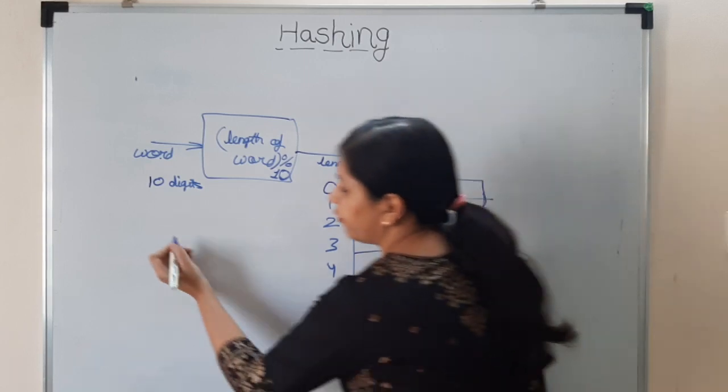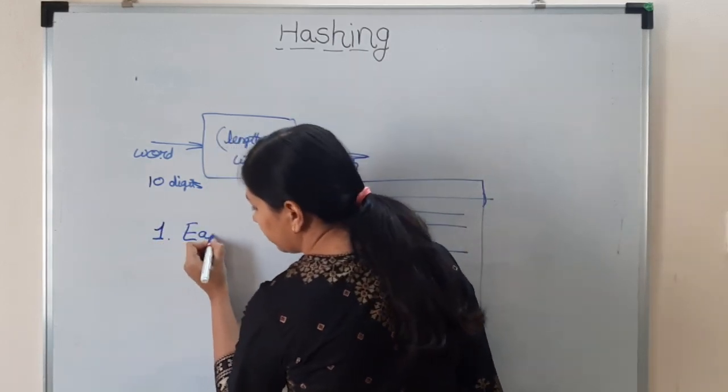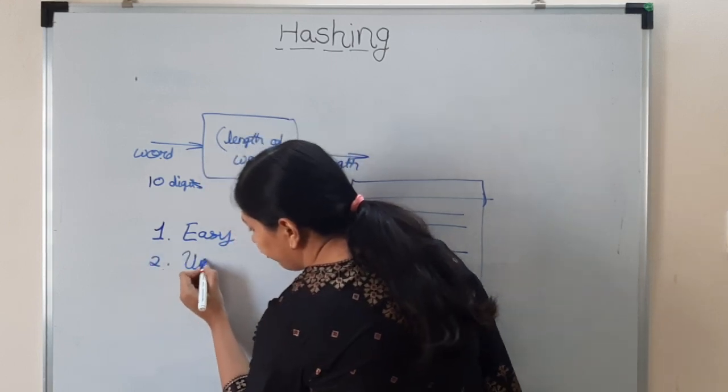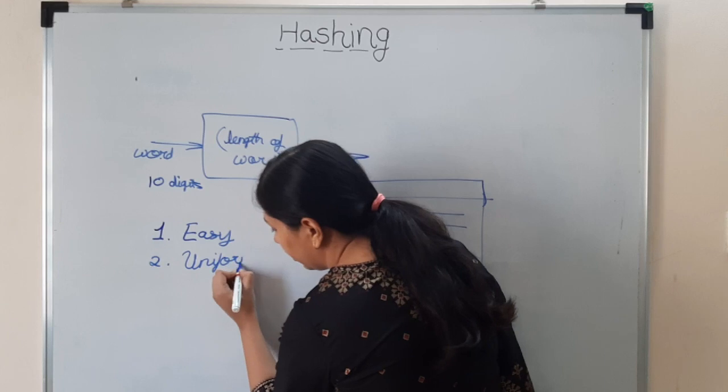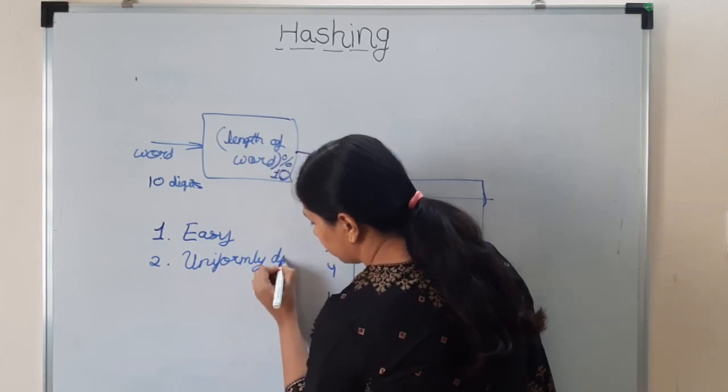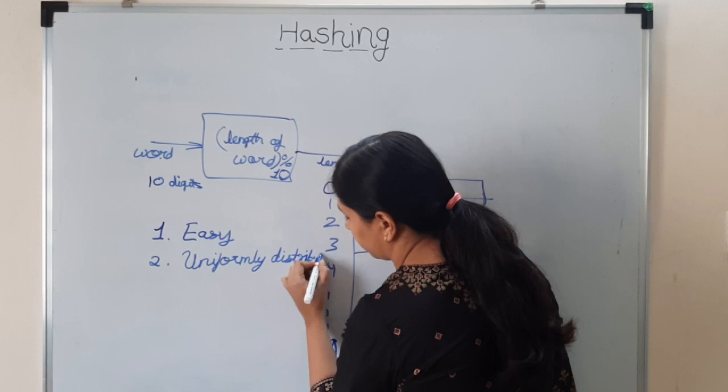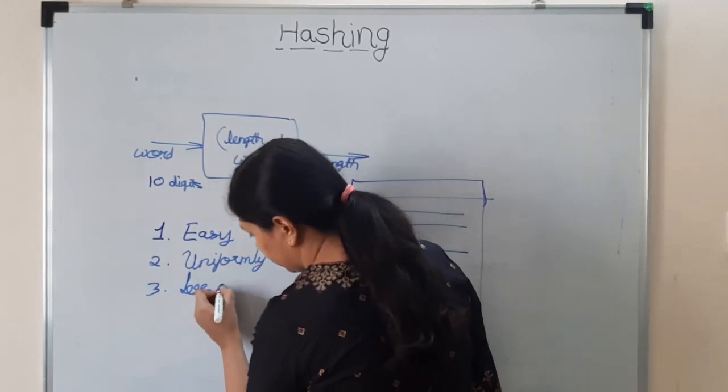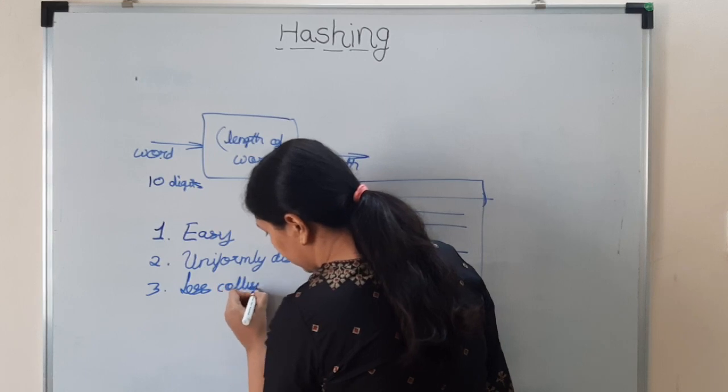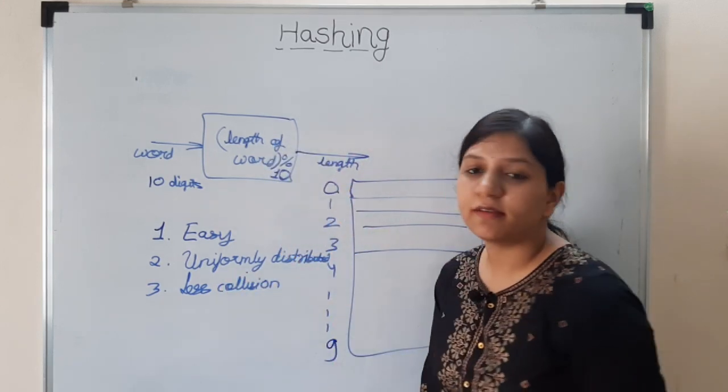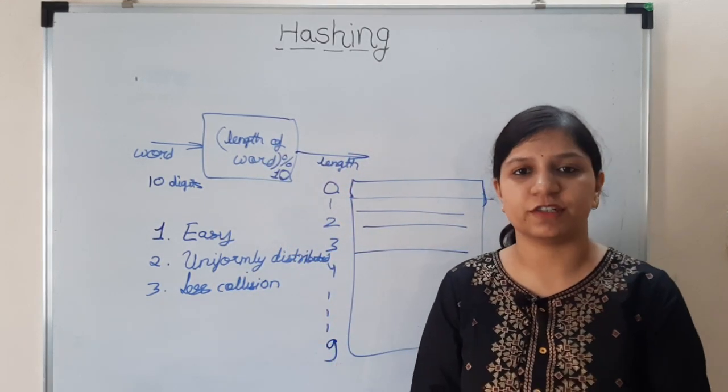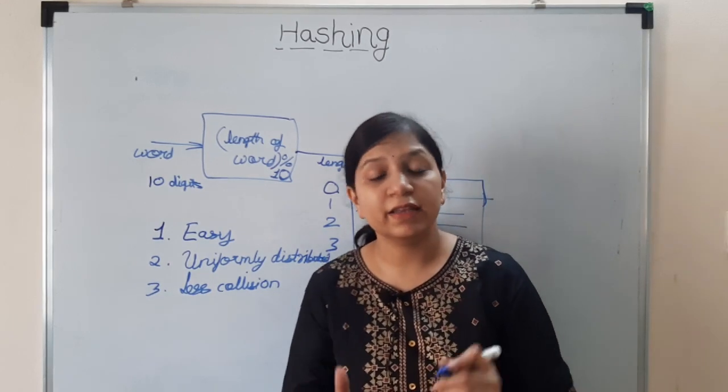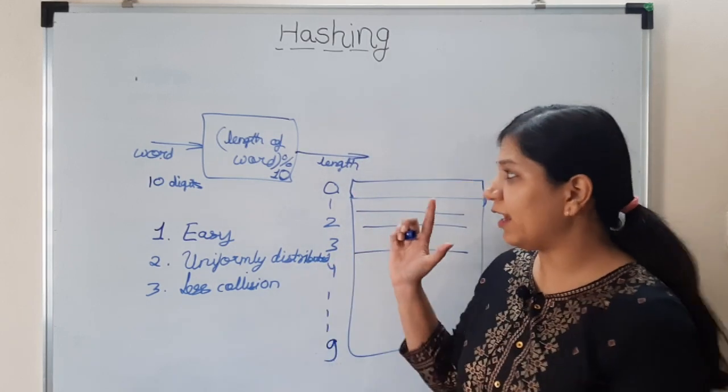We'll see how we handle collision, but you're getting the point that all are getting concentrated at one point. But a good hash function is not like that. What are the characteristics of a good hash function? First: easy to calculate. Second: uniformly distributed. And third: less collision. So these are the characteristics of a good hash function.